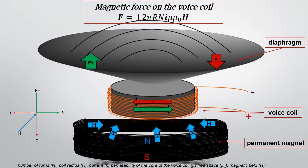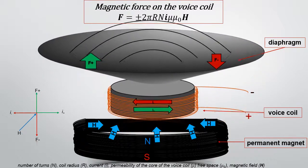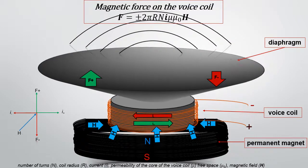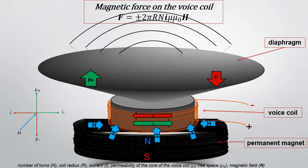These two magnets — the electromagnet and the permanent magnet — interact with each other like normal magnets. That is, the positive pole of the electromagnet is attracted to the negative pole of the permanent magnet, and the negative pole of the electromagnet is repelled by the negative pole of the permanent magnet. This causes the voice coil and the diaphragm of the speaker to either attract or repel at the same frequency as the original signal, which creates sound waves at the desired frequency.